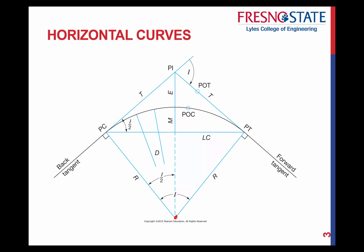LC stands for long chord. That is the straight line from your point of curvature over to your point of tangency. L, though not written on the diagram, is the distance along the curve — from your PC all the way along the curve until you hit your point of tangency. That's the whole length of the curve, and generally that's what we're solving for.